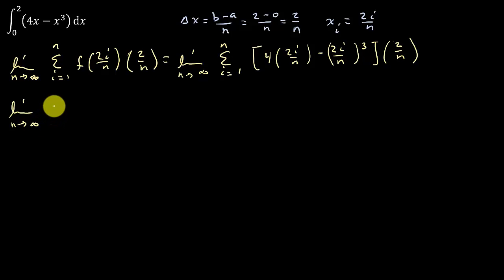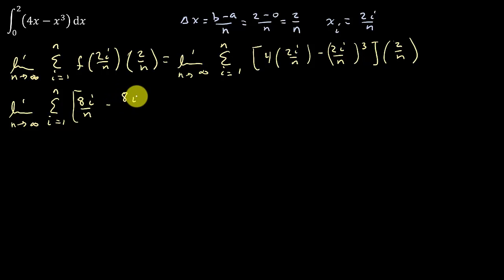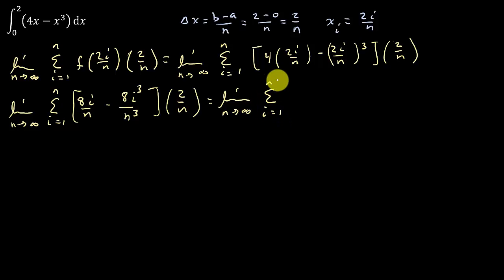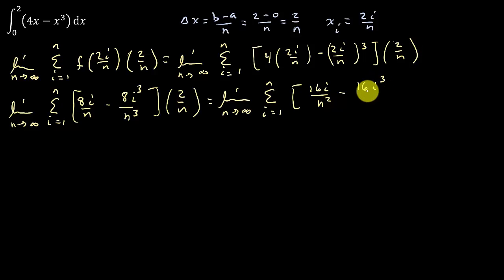That gives us the limit as n goes to infinity, sum from i equals 1 to n. Simplifying inside: that's going to be 8i over n minus 8i cubed over n cubed, times 2 over n. Now multiplying each term by 2 over n, that gives the limit as n goes to infinity, sum from i equals 1 to n, of 16i over n squared minus 16i cubed over n to the 4th.